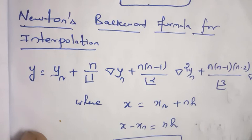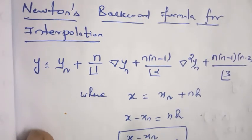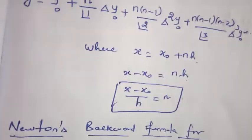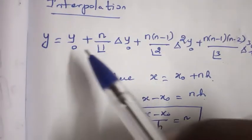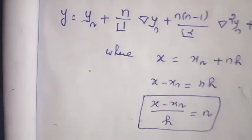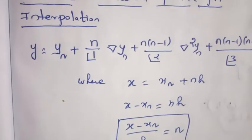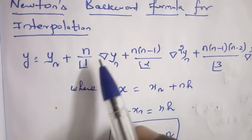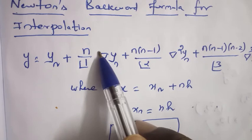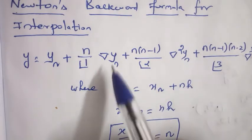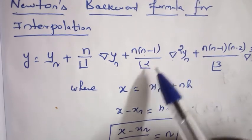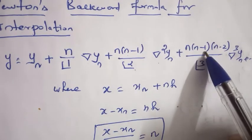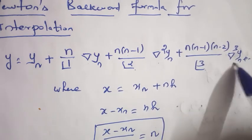Next one is Newton backward formula for interpolation. Y equal to YN. In the forward, we have to take the starting element Y naught. In the backward, we have to take the ending element. Y equal to YN plus N by 1 factorial into Nebula YN plus N into N minus 1 by 2 factorial into Nebula square YN plus N into N minus 1 into N minus 2 by 3 factorial into Nebula cube YN, etc.